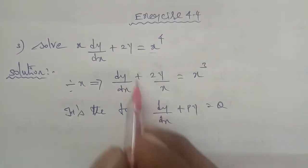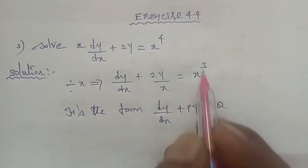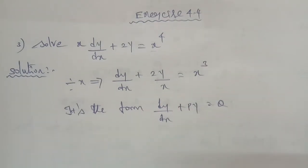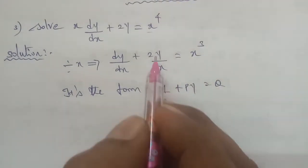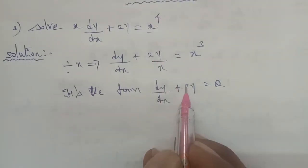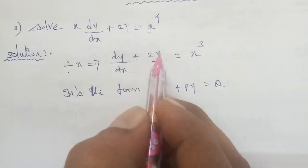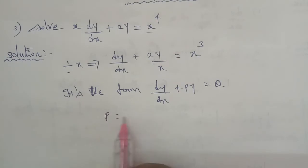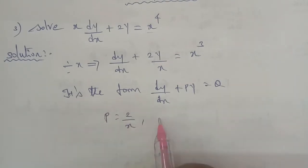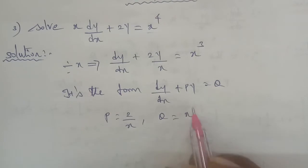So here the p value and q value are identified. The p term is 2 by x — so p is equal to 2 by x, and q is equal to x power cube.